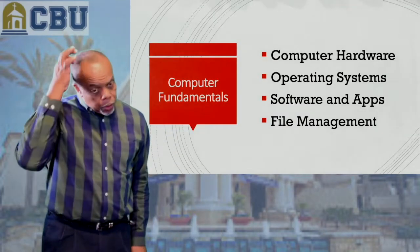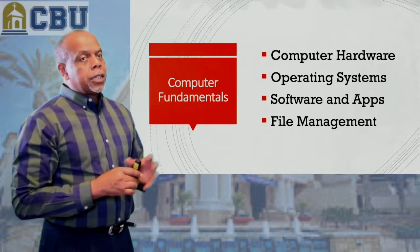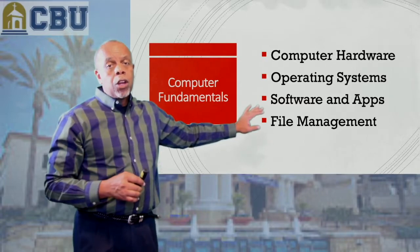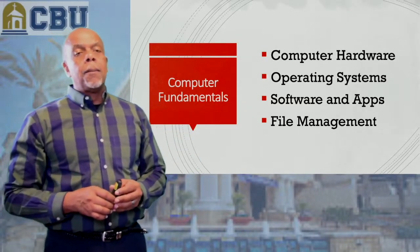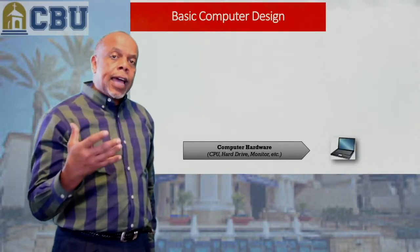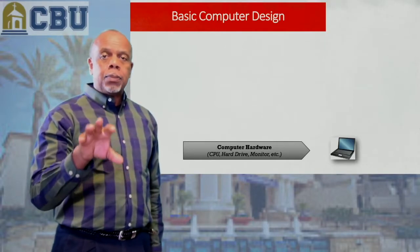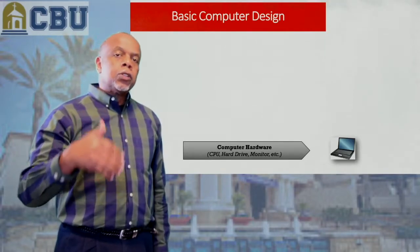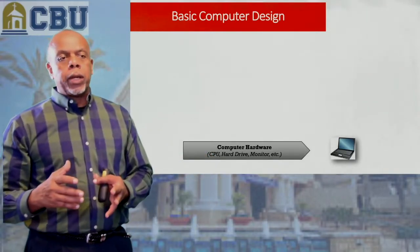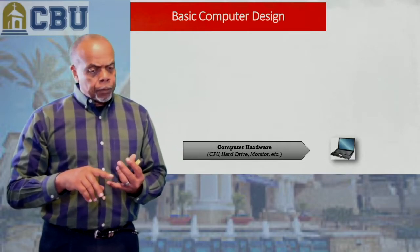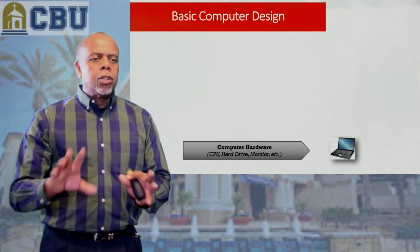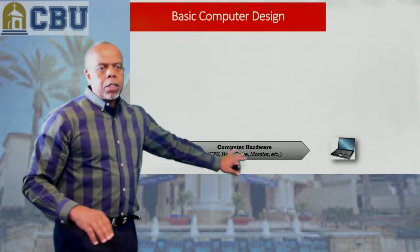When we talk about computers and computer fundamentals, there are four areas I really boil this down to: hardware, operating systems, software and applications, and file management. We're going to walk through each of these because when we think about the design of that computer — that laptop or desktop you work with every day — it's built on those fundamental concepts. At the core, at the base, we have what we call computer hardware: your central processing unit or CPU, your hard drive, and all those pieces.